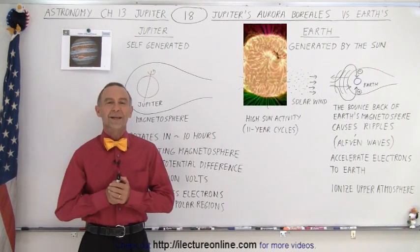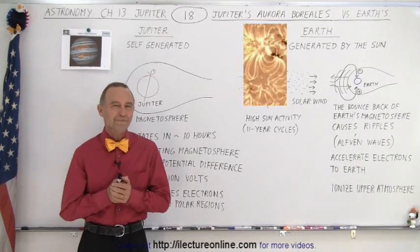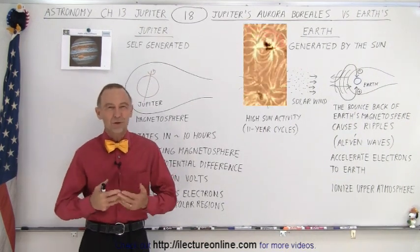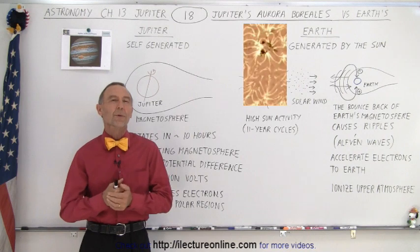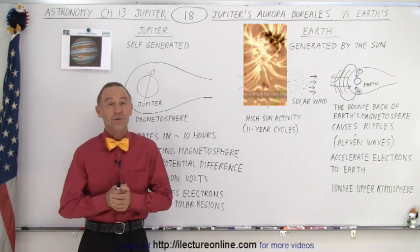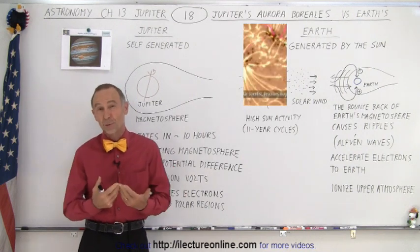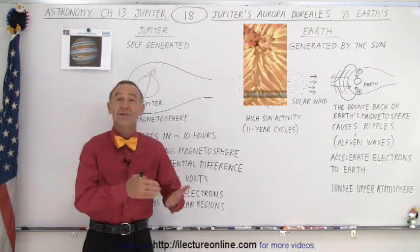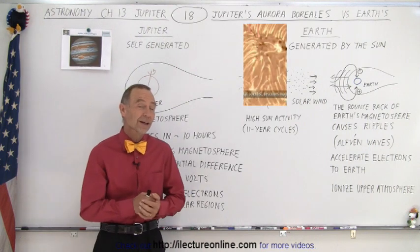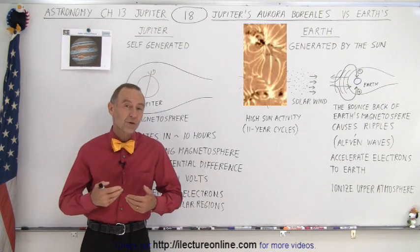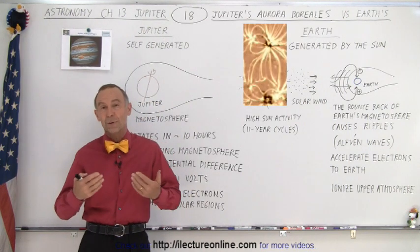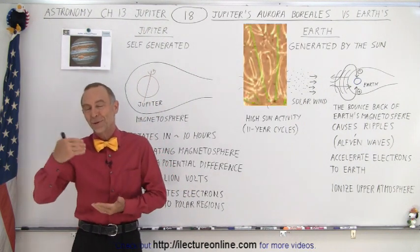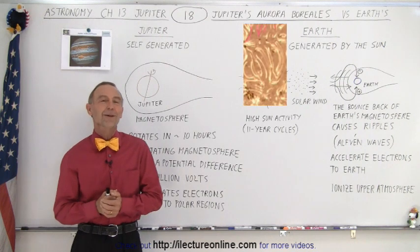Welcome to Electronline. Now let's talk about Jupiter's Aurora Borealis, also known as the Northern Lights. Of course we might as well call it the Southern Lights as well, because usually we have what we call Northern Lights both at the North Pole and at the South Pole.